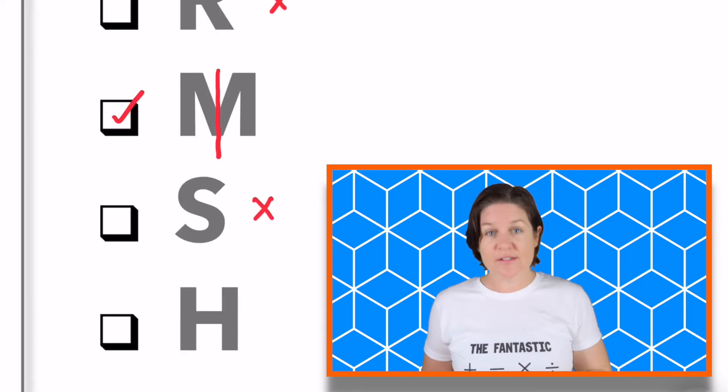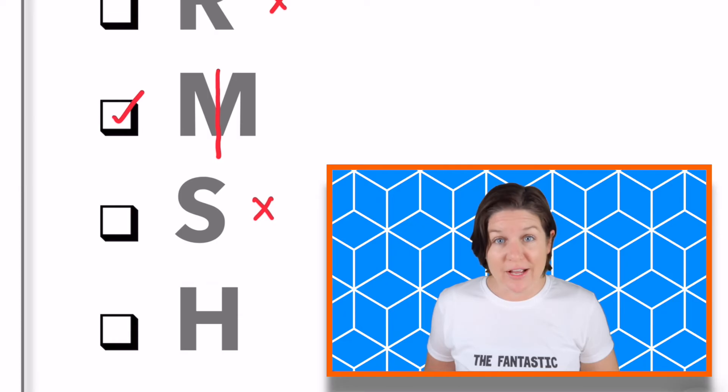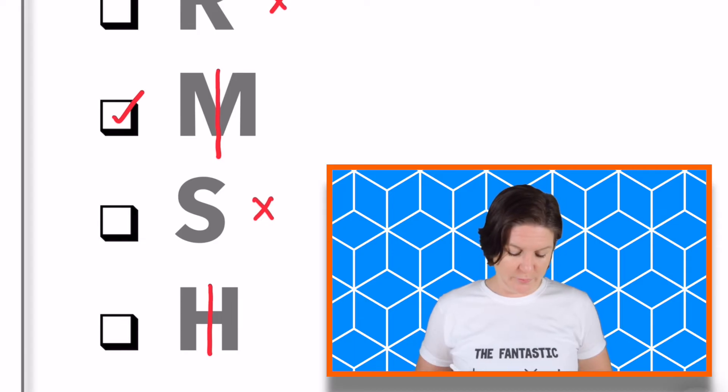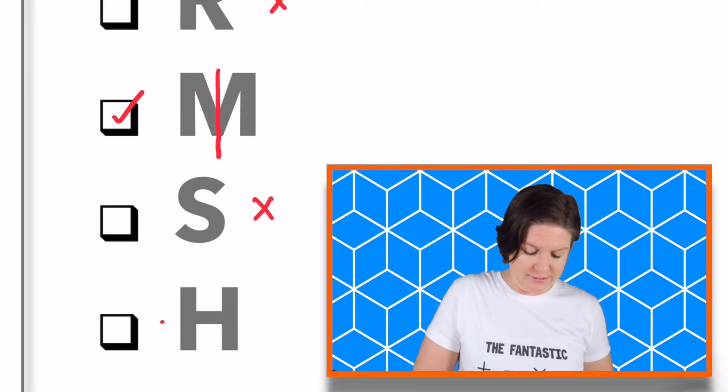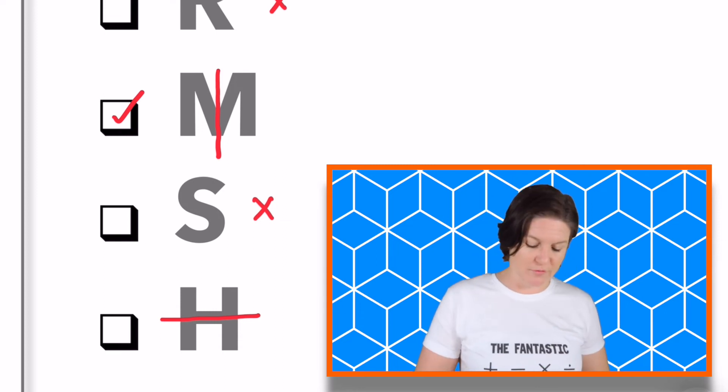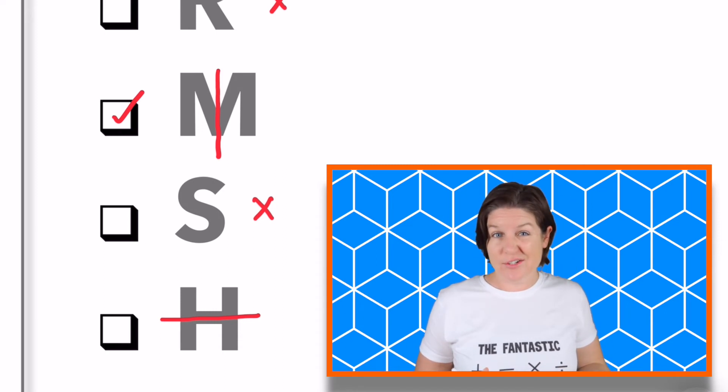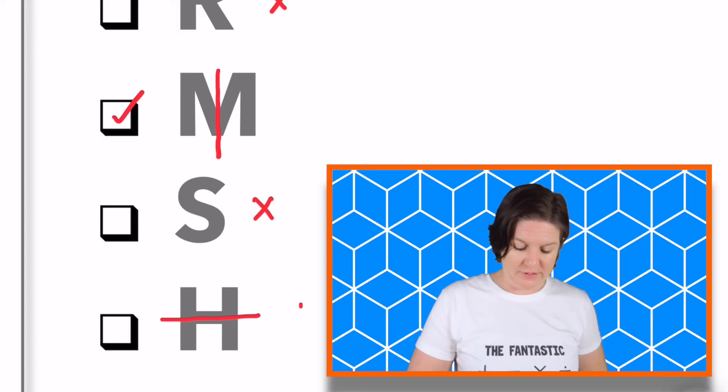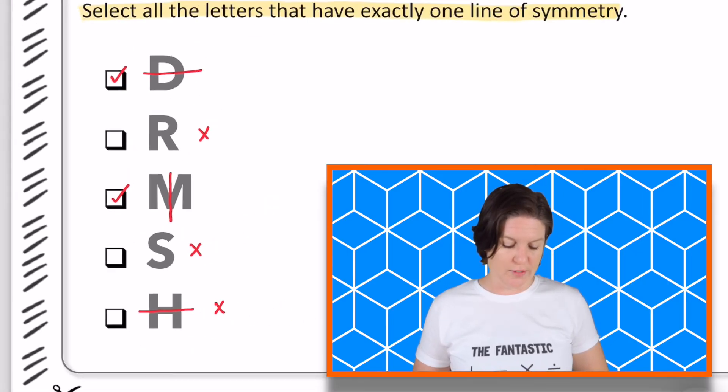How about this letter H? How many lines of symmetry did you find? Let's see. Well, there is one right here. If you were to fold right there, that would work. And there is one going from side to side. So there's actually two lines of symmetry for this one, which means can we select this answer? No, because we're looking for answers that have exactly one line of symmetry. And H has two, so we can eliminate that one.